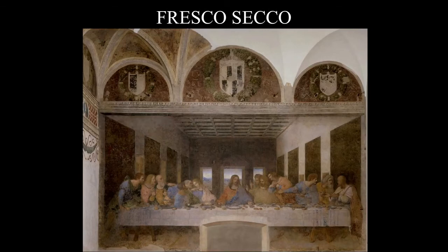Sometimes fresco seco was used to kind of cheat the system where traditional fresco wasn't possible. In the case of the Last Supper, it was really a 15-foot by 30-foot oil painting on top of a plaster wall. If da Vinci had known the long-reaching effects of this painting, I think it would have been done in fresco — but da Vinci wasn't trained in fresco painting, and that is a topic for a later lecture.